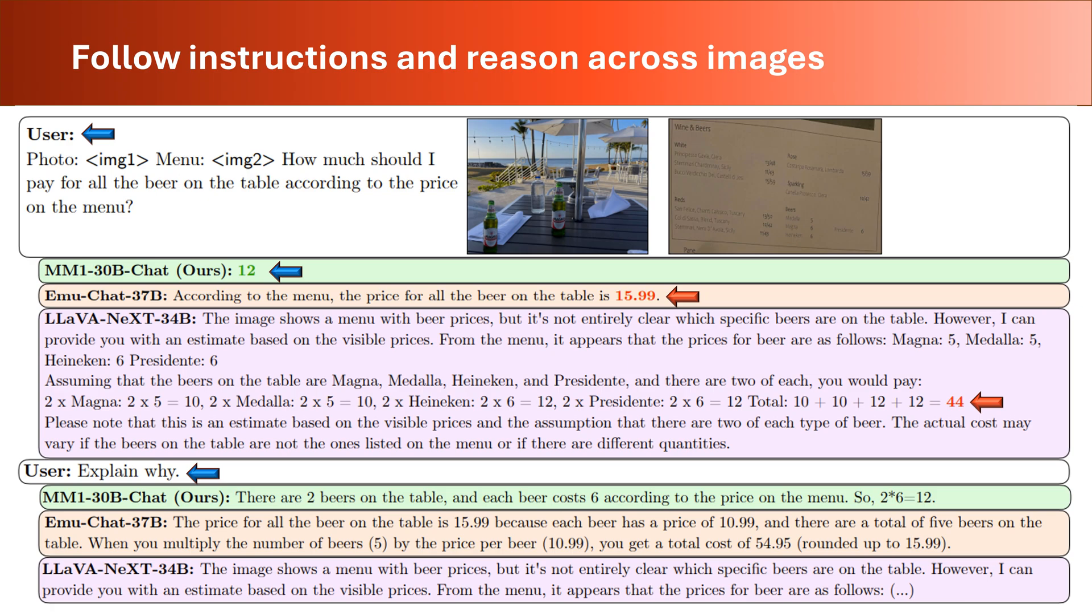This result is compared with the results of two other available models, with 37 and 34 billion parameters. It can be seen that both of these models give incorrect results. Next, the user asks the model to explain why. The MM1 model simply explains how it can calculate its result. But the other models fail to do so.